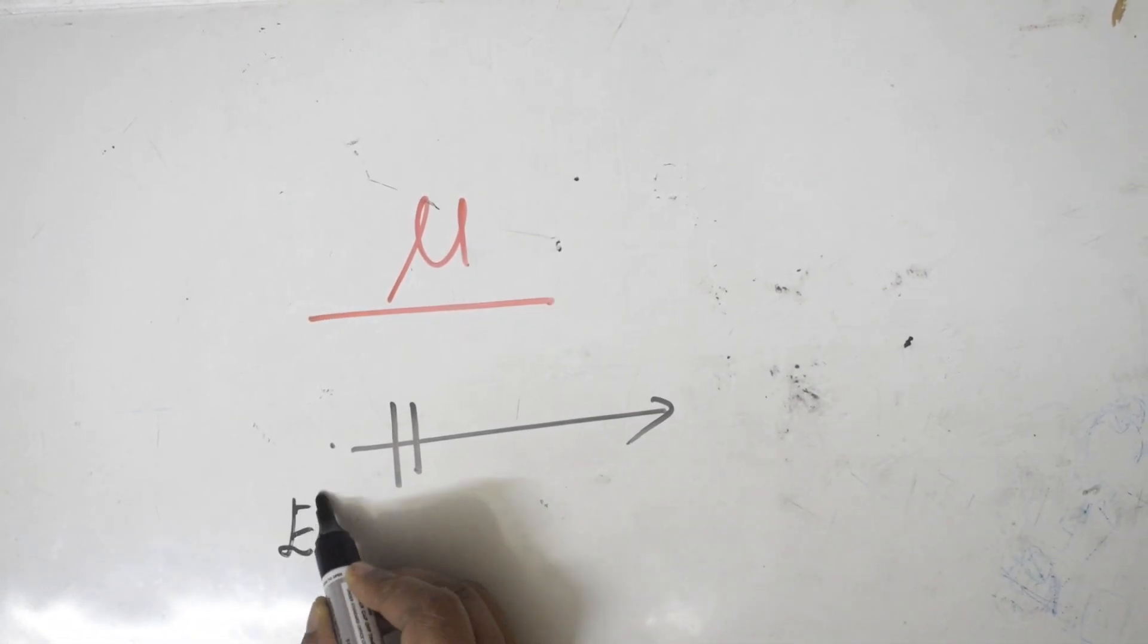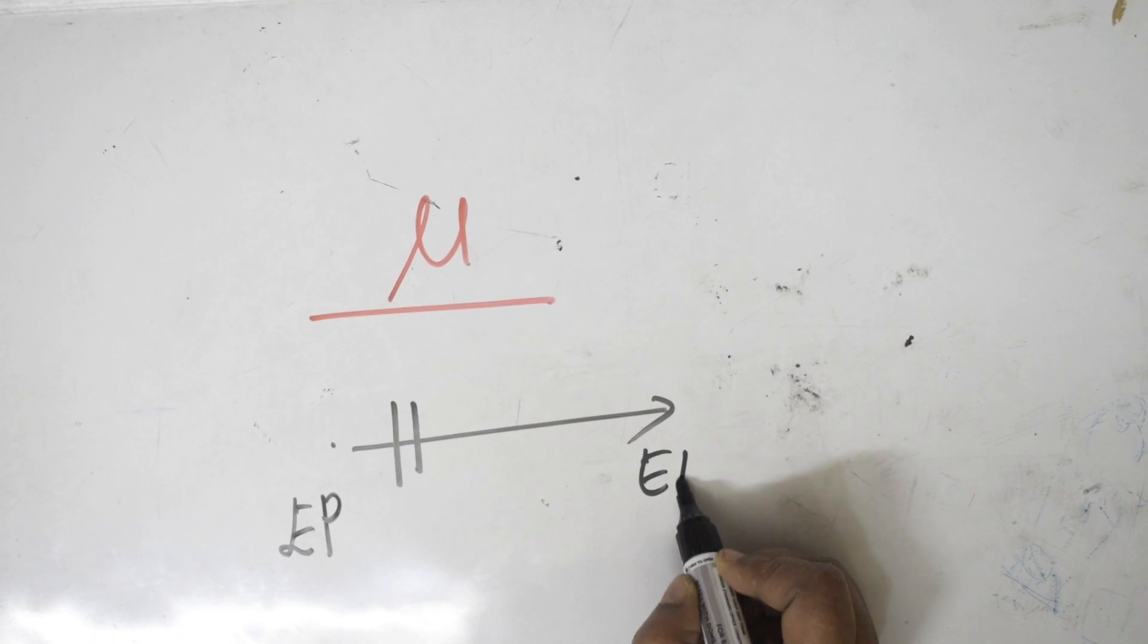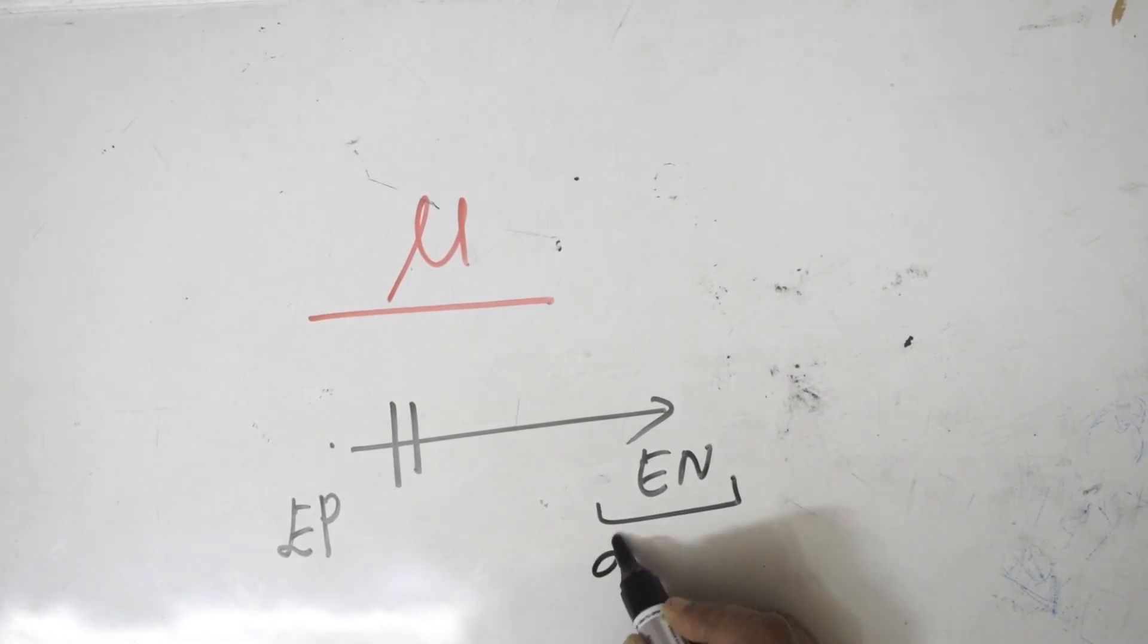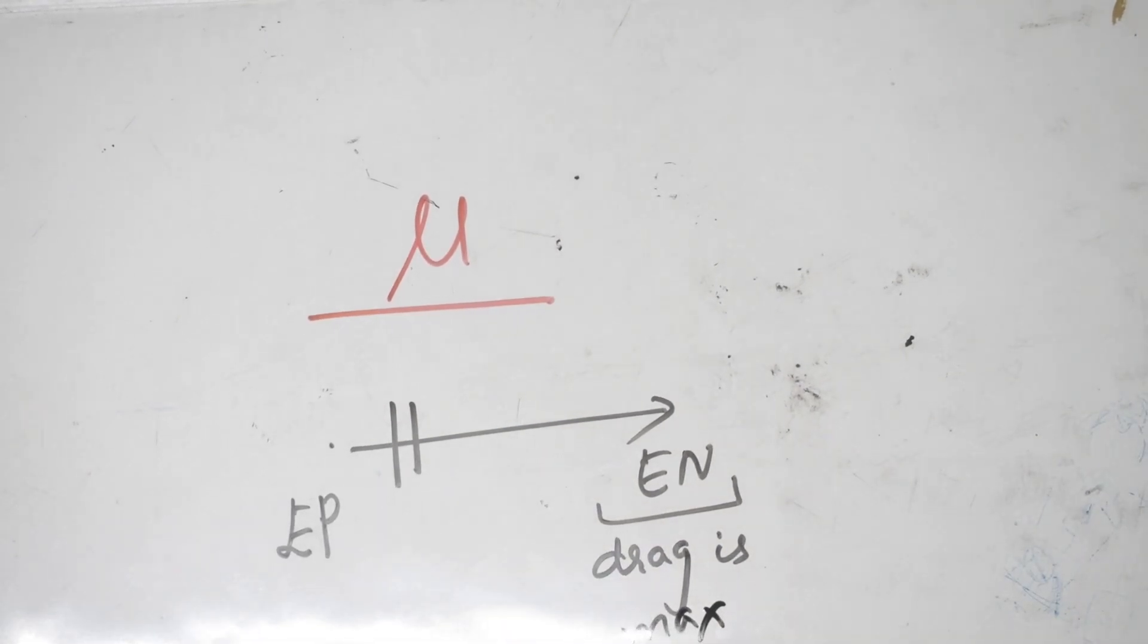So this mu is denoted in chemistry by an arrow which is just like this with two lines. This denotation starts from most electropositive element to an electronegative element where the drag is more maximum, the pull is maximum. Whenever you are representing, it means the electron density is moving from here till here.